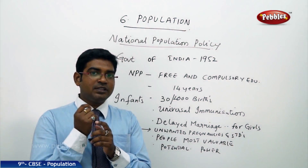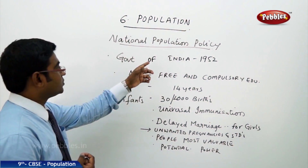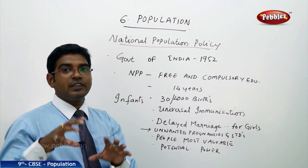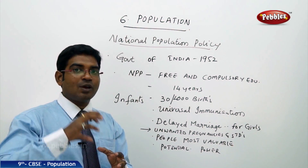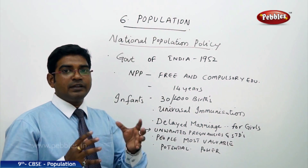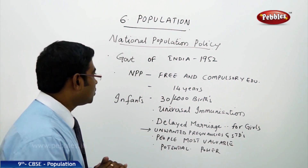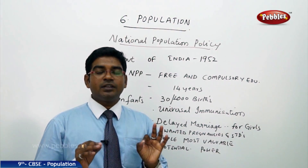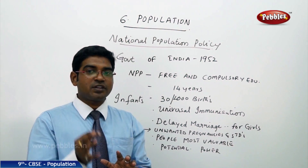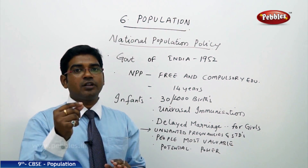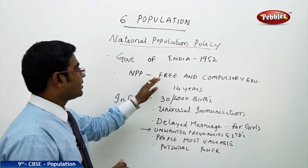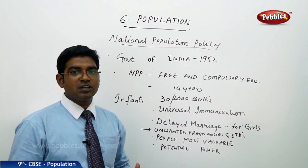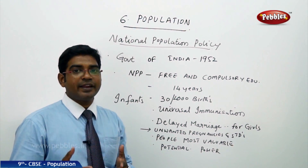The government of India has taken a comprehensive family planning program under the National Population Policy. After sustained efforts since 1952, the government planned to promote healthy families and voluntary parenthood with proper care of children. This policy came into existence in the year 2000, bringing certain rules and regulations to be implemented strictly and followed by all people.